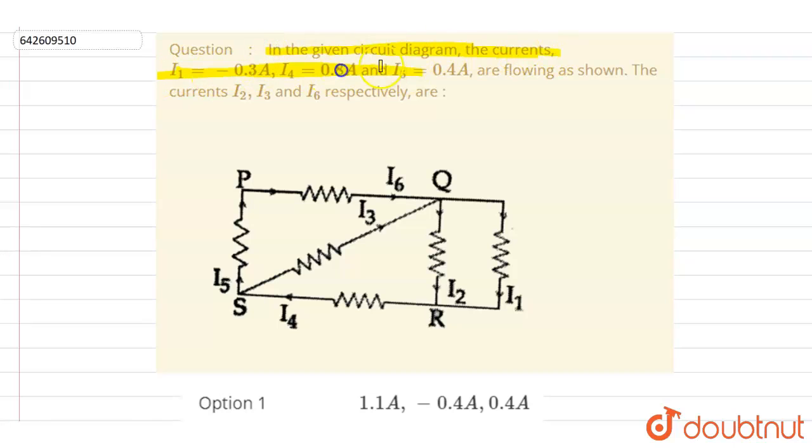Hello everyone, in the given circuit diagram the currents i1, i4, and i5 are shown. You have to find out i2, i3, and i6.